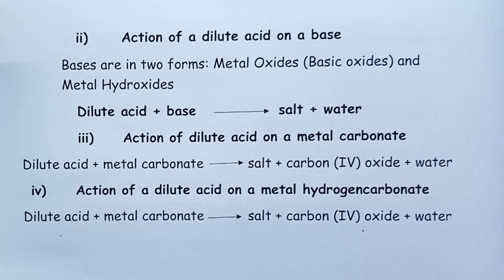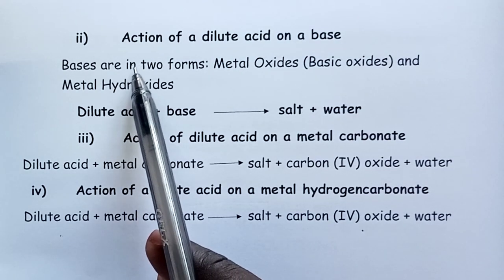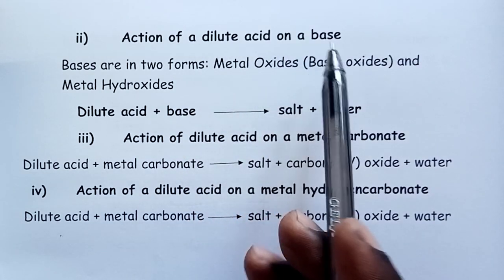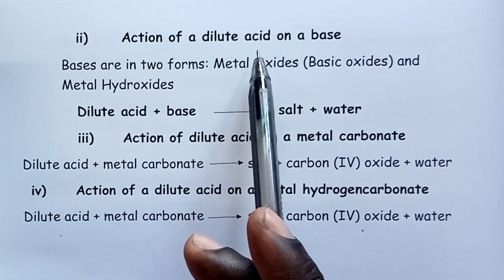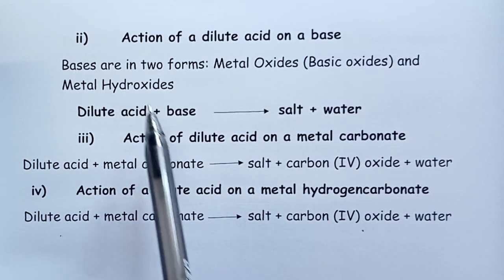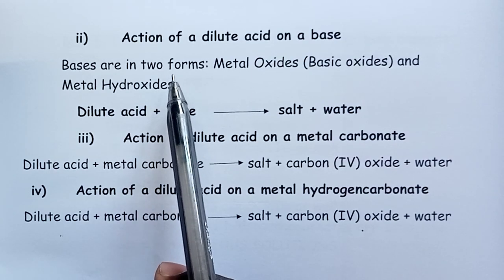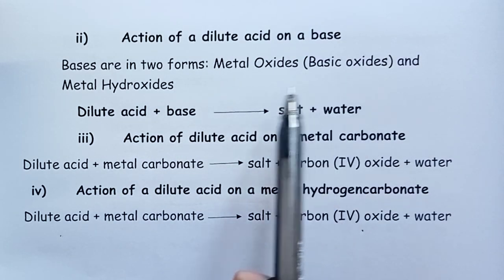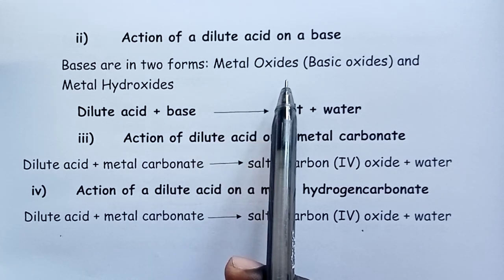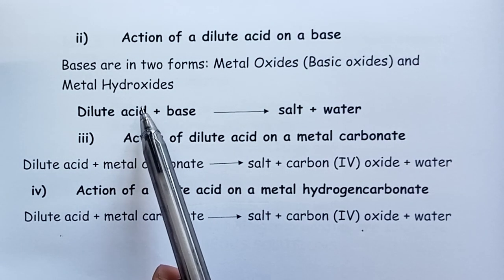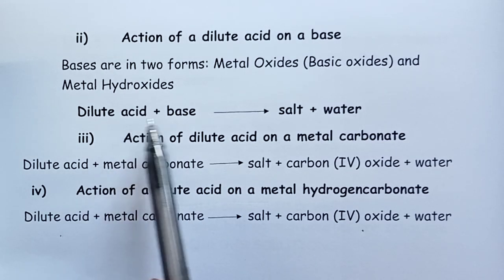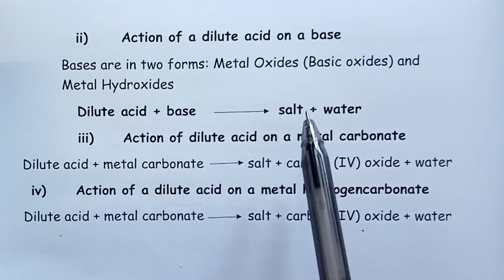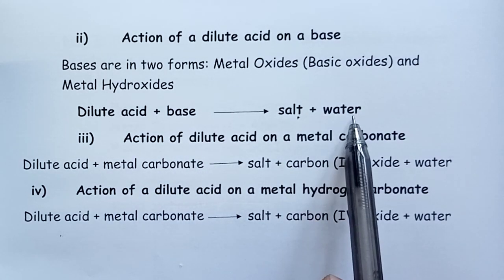The second method available for preparation of soluble salts is the action of dilute acids on a base. Such reactions are called neutralisation reactions. Bases come in two forms: basic oxides, which are oxides of metals, and metal hydroxides. When a dilute acid reacts with a base, we get our salt in solution and some water.